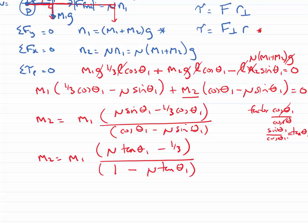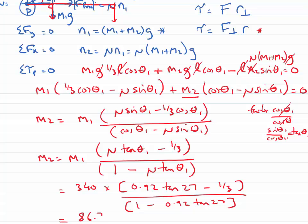Remembering the mass of the log was 340 kilograms, the coefficient of friction was 0.92, the angle was 27 degrees. Putting that into my calculator, I get that M2 equals 86.7 kilograms, so that's the maximum mass my climber can have.